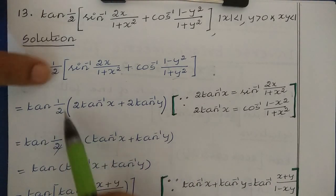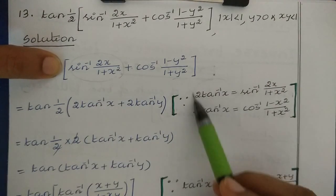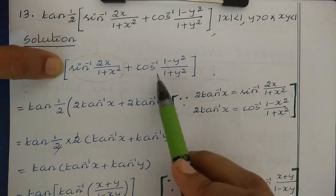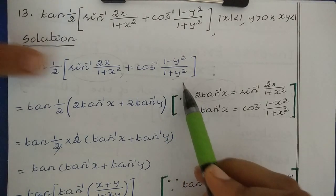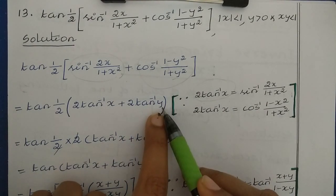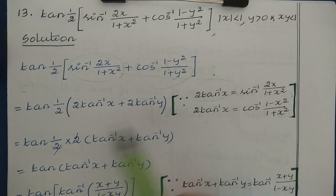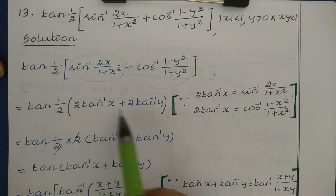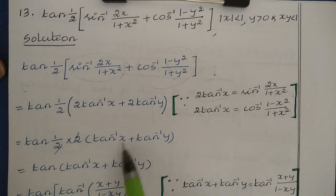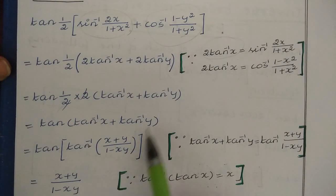Applying these formulas, sin⁻¹(2x/(1+x²)) is replaced by 2 tan⁻¹x, and cos⁻¹((1−y²)/(1+y²)) is replaced by 2 tan⁻¹y. So the expression becomes tan(½ × (2 tan⁻¹x + 2 tan⁻¹y)). Taking out the 2, we get tan(tan⁻¹x + tan⁻¹y), where the ½ and 2 cancel.